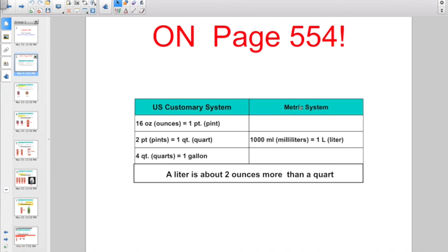Over here on the metric system, what they want you to know: 1,000 milliliters in a liter. Hopefully you also know there's 100 centiliters in a liter, right? Because that word centi means 100. And a liter is about two ounces more than a quart.